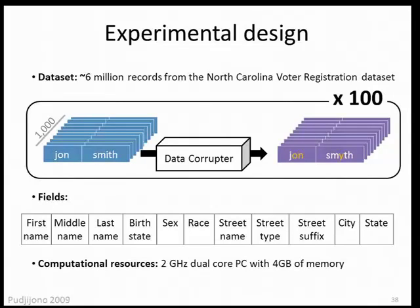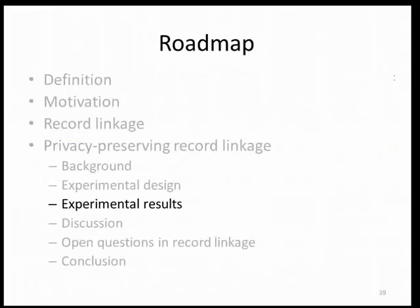Here we see the fields used in the experiment — these are string-based fields and none of them individually is uniquely identifying, so the hope is that in combination they will uniquely identify an individual. These are the computational resources on which these experiments were run.